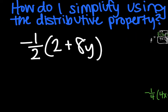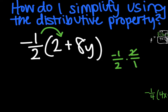Second example: negative 1/2 times the quantity (2 + 8y). Feeding the birds — negative 1/2 times 2. Step off to the side of the problem: times 2 over 1. Simplify before you multiply, and you're left with negative 1 over 1, which is negative 1. So that's my answer for that first spot.